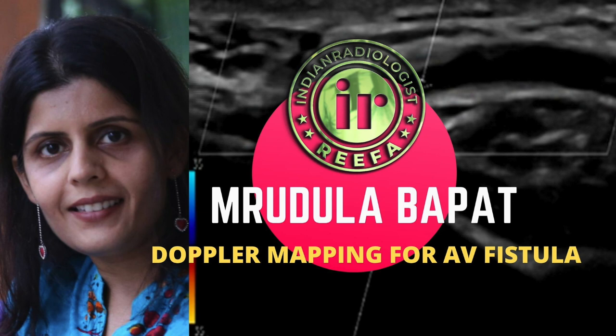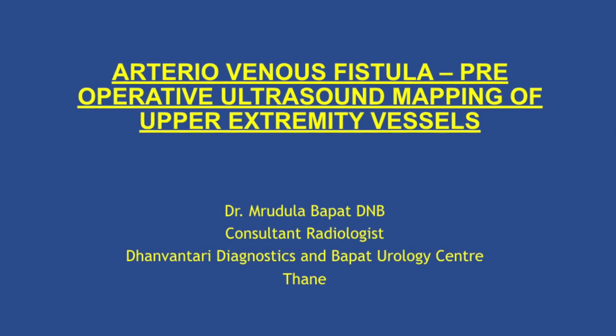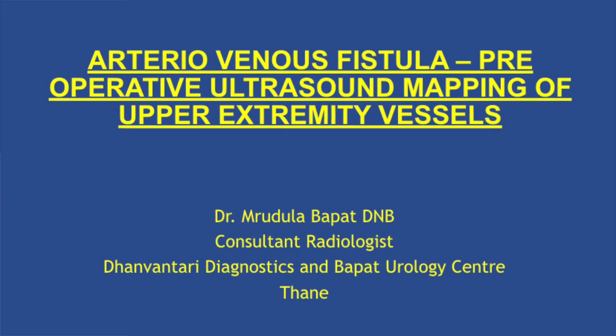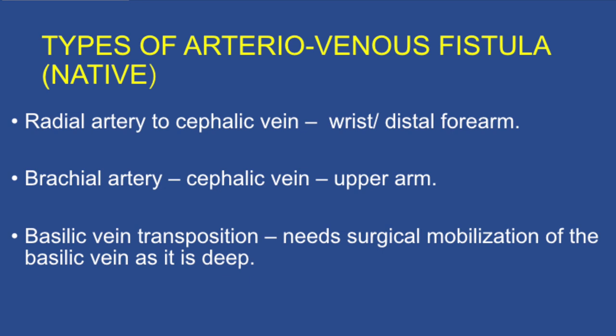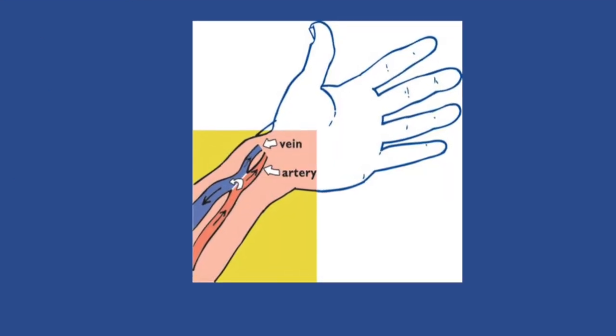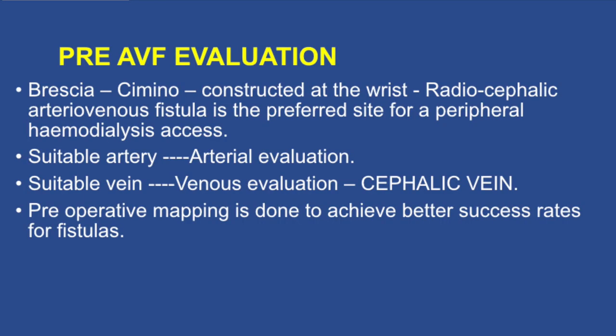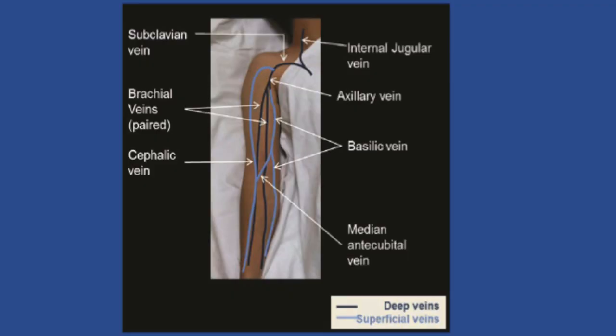Surgeons send patients for vein marking prior to AV fistula surgery, and how exactly to mark the vein is very important because it carries a lot of implications for surgical success. Many times it happens that the surgeon takes an incision and finds a thrombosed cephalic vein which cannot be used — a complete waste of all effort. Doppler mapping done prior to surgery is really helpful and useful, guiding the surgeon to suggest the best possible site for construction of an AV fistula.